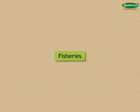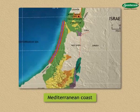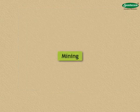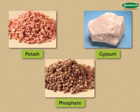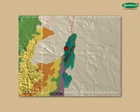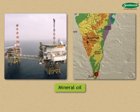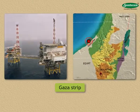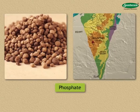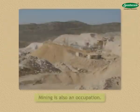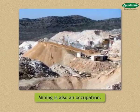Fisheries have developed along the Mediterranean coast. In terms of mining, potash, gypsum, and phosphate are found on the coast of the Dead Sea. Copper is found near Eilat, mineral oil near the Gaza Strip, and big deposits of phosphate are found near the Negev. Mining based on this mineral wealth is also an occupation.